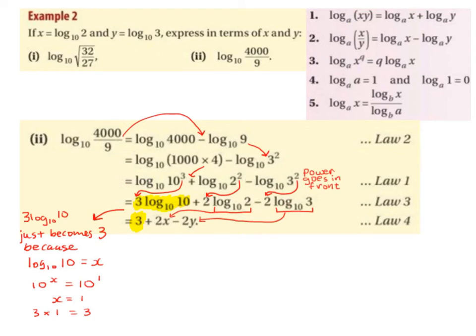This highlighted part is very important: 3 log base 10 of 10 is just going to become 3. If we take log base 10 of 10 equal to x, using the scorpion tail method — start at the base 10, wrap the tail around the x, pass the equals — we get 10 to the power of x equals 10, which is 10 to the power of 1. Cancelling the bases, x equals 1. So log base 10 of 10 equals 1, and 3 times 1 is 3.